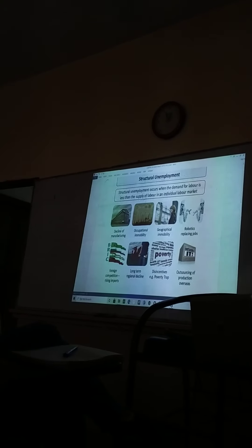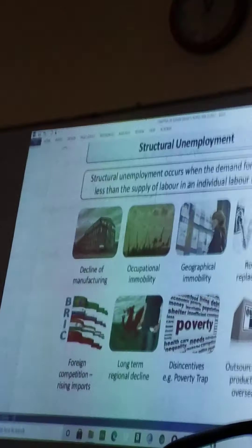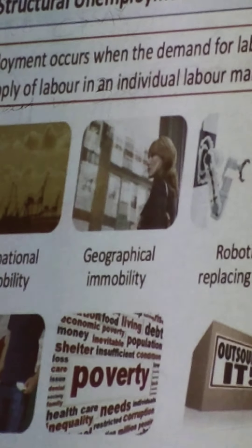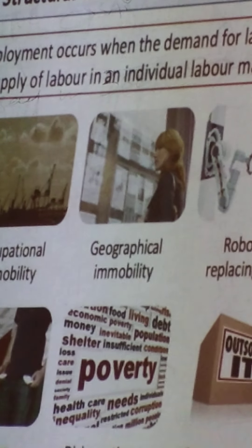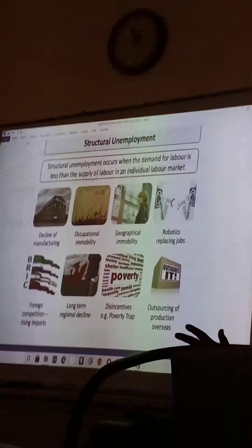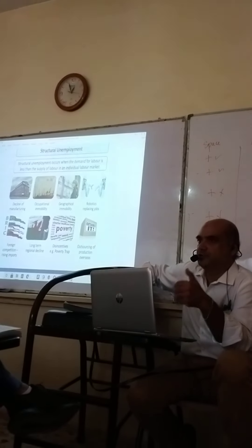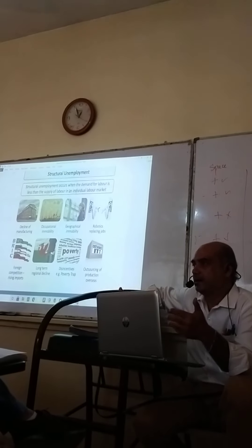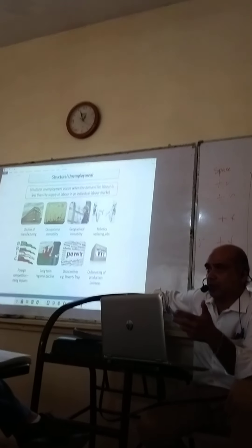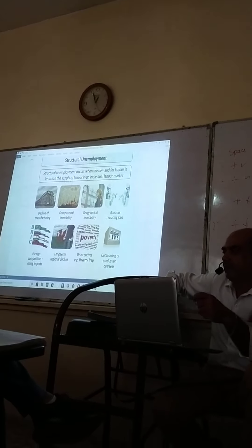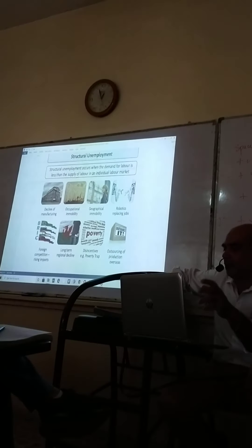Geographical immobility: when there are extreme cases of poverty in an economy, people may not have enough money to move from one region to another region in order to get a better job, or any job at all. So they will remain unemployed.